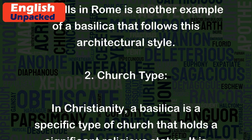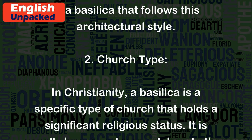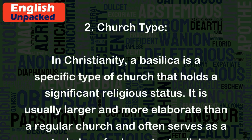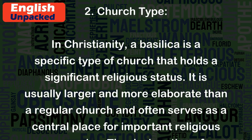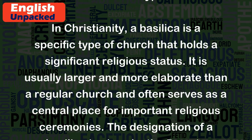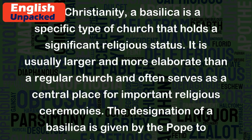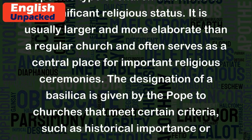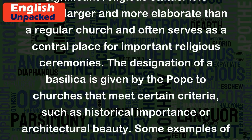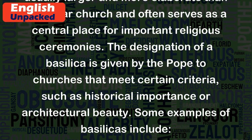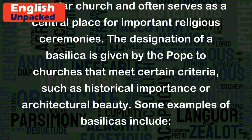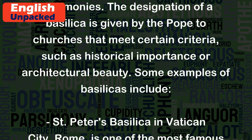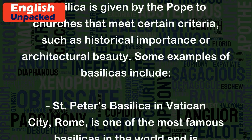2. Church Type. In Christianity, a basilica is a specific type of church that holds a significant religious status. It is usually larger and more elaborate than a regular church and often serves as a central place for important religious ceremonies. The designation of a basilica is given by the Pope to churches that meet certain criteria, such as historical importance or architectural beauty.